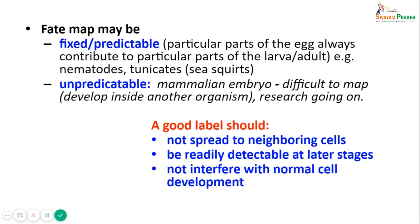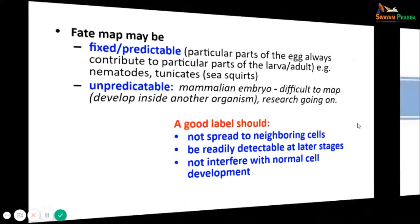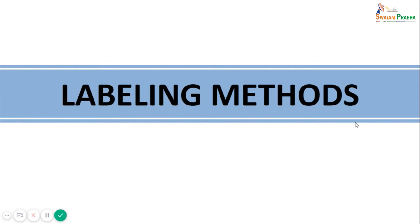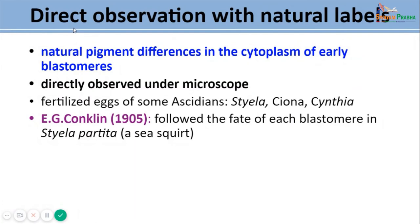There are a number of methods used to label blastomeres to study their fate maps. First is direct observation with natural labels. Certain embryos have natural differences in pigments in the cytoplasm of their early blastomeres, making it possible to directly observe them under a microscope and trace the fate of each cell. As seen in fertilized ascidians like Styela, Siona, and Cynthia, Edward Conklin followed the fate of each blastomere individually in Styela partita by virtue of differences in pigment in their cytoplasm.